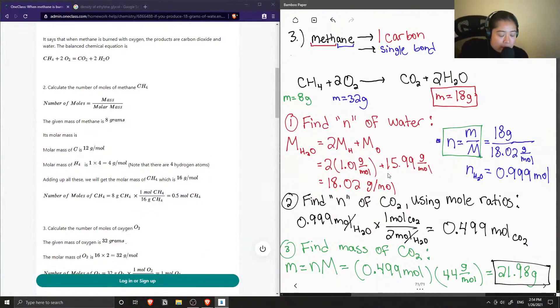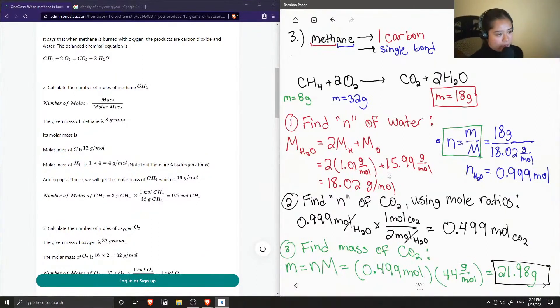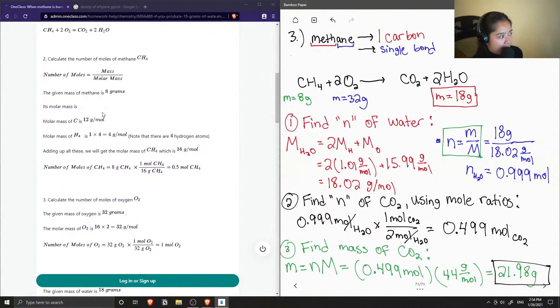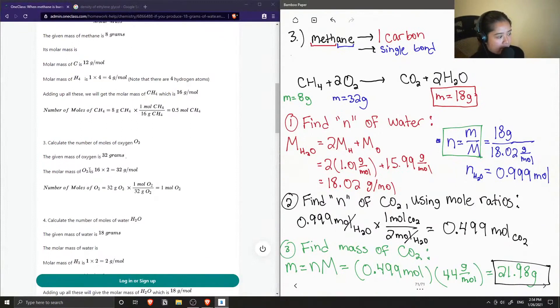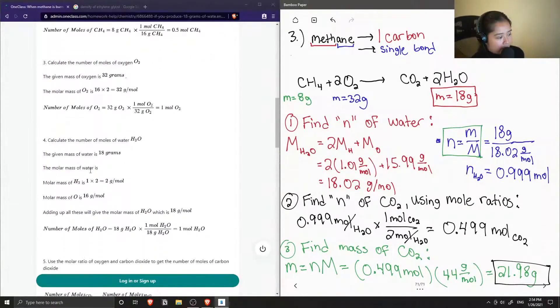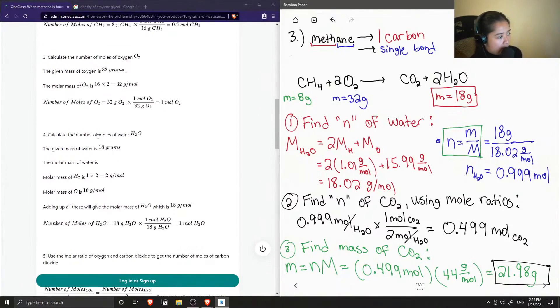But still, this is how you would do it if you want to do it the long way and get all your steps in. Given the mass of methane and its molar mass, you can find the number of moles of CH4. You can do the same thing for oxygen. Calculate the number of moles of water, which they did as well. They got 1.